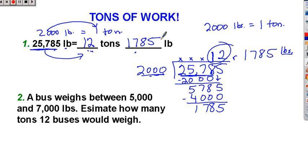Okay, the next one is very similar to that. A bus weighs between 5,000 and 7,000 pounds. Estimate how many tons 12 buses would weigh. Well, if the buses weigh between 5,000 and 7,000, that would put them at about 6,000 because the number 6,000 comes perfectly in between 5,000 and 7,000.